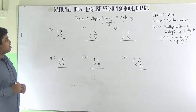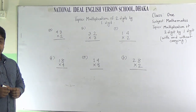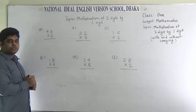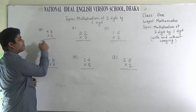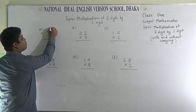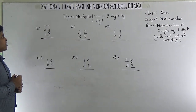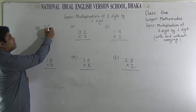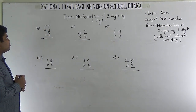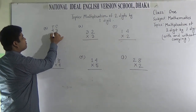At first, we shall learn multiplication of 2-digit by 1-digit without carrying. The first problem is 43 × 2. Here, 3 is in the 1's place and 4 is in the 10's place. At first we multiply 3 by 2, then we multiply 4 by 2.